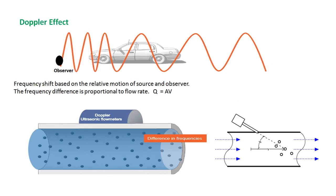The Doppler effect is something everyone has commonly experienced. When you stand on the road and an ambulance or police vehicle passes you, as it comes near there is a high pitch — an increase in sound frequency. As it moves away, there is a low pitch — a decrease in frequency. This same principle is used for measuring flow rate in ultrasonic flow meters.